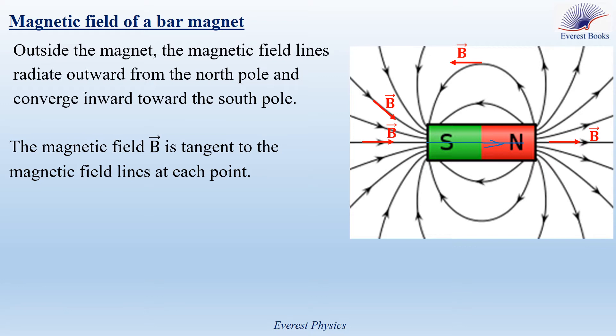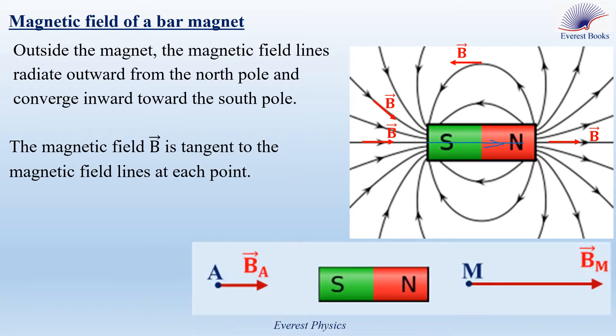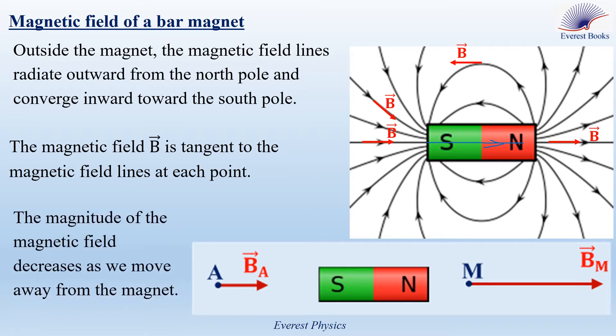We draw the magnetic field at four different positions beside the magnet. You have a bar magnet and you have two points beside it. We draw the magnetic field at these two points. The magnetic field at point M is drawn longer than that at point A. This is because the magnitude of the magnetic field decreases as we move away from the magnet.